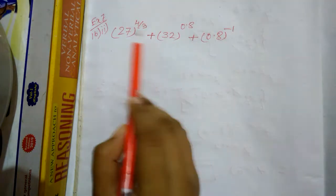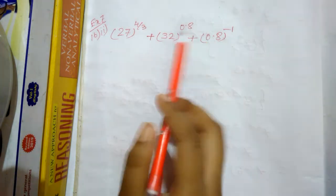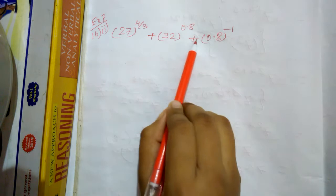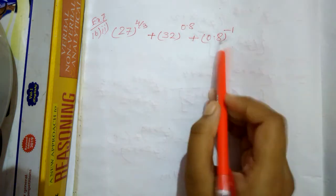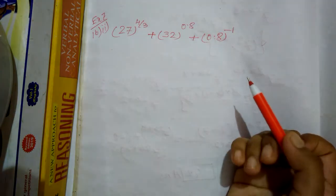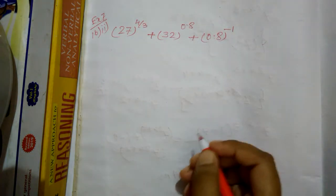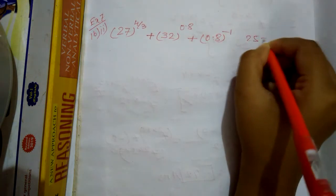The given question is: 27 to the power 4 by 3, plus 32 to the power 0.8, plus 0.8 to the power minus 1. Now the basic concept of indices is to take the common base, which means converting numbers like 25 into 5 squared and 125 into 5 cubed. Common base and the power varies.